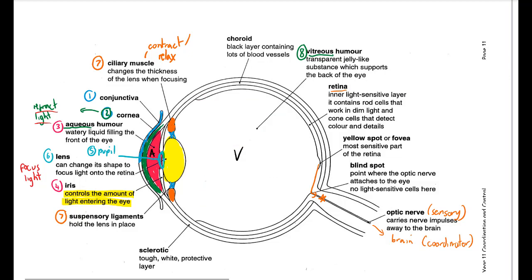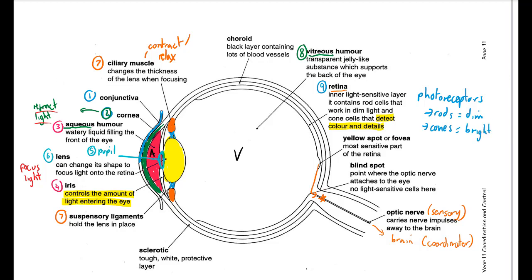The next layer is the retina, which is the most important one — it's what allows us to see. It detects color and detail and contains photoreceptors known as rods, which help us see in dim light, and cones, which help us see in bright light and allow us to see color.